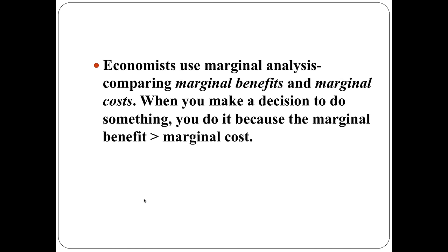Continuing with the margin: economists use what's called marginal analysis, comparing the marginal benefits and marginal costs. When you make a decision to do something, you do it because the marginal benefit is greater than the marginal cost — the benefit of doing that additional thing is greater than the cost. For example, when you decide to get up today and go to school, you did it because the marginal benefit was greater than the marginal cost. The benefit of getting up and going to school is greater than the cost of doing it. That is an important part of economic rationality.